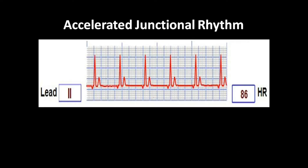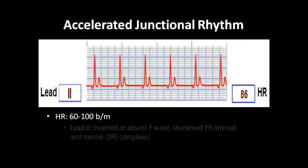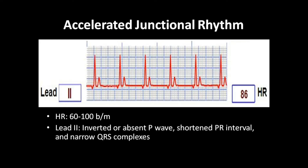Accelerated junctional rhythm — the rhythm originates from the junction but at an accelerated rate, so the heart rate will be 60 to 100 beats per minute. Normally, junctional rhythm is between 40 to 60 beats per minute, but since it exceeds 60 beats per minute, it is called accelerated junctional rhythm. There will be an inverted or absent P wave.